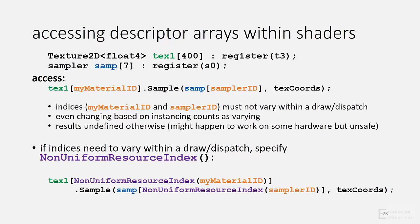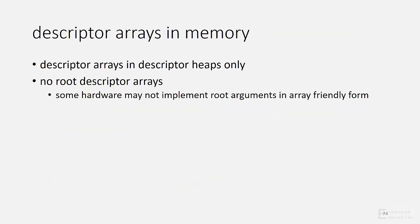So there's a slight inefficiency there, but it also provides correctness. You don't want to take that inefficiency if you know you're going to have uniform accesses. The default is uniform access because it's assumed that will be the most common case. Descriptor arrays can only be backed by descriptor heap memory — there's no support for arrays of root descriptors. The reason is that the implementation of root arguments on some hardware isn't array-friendly.